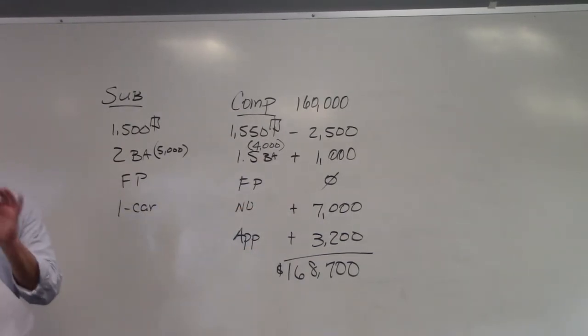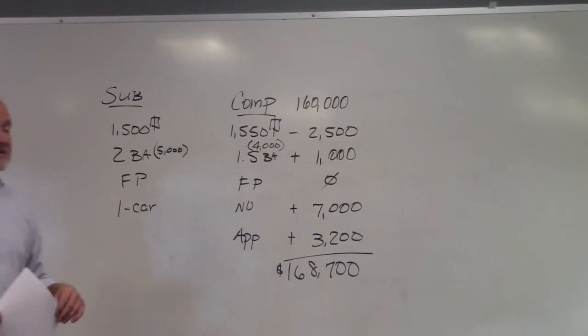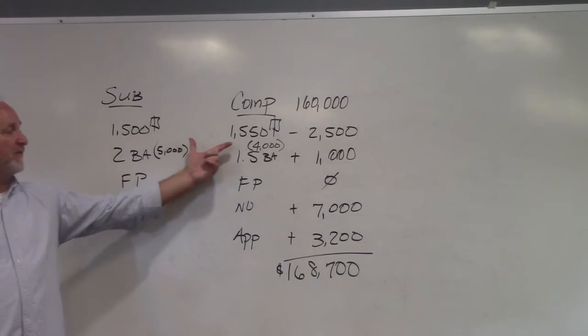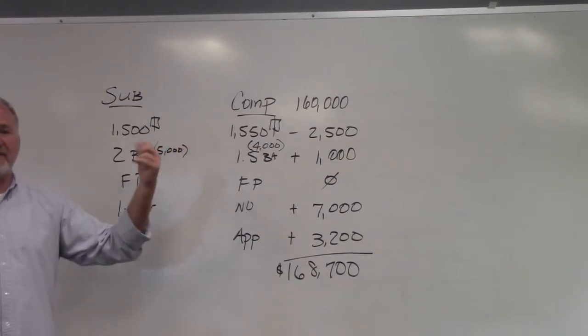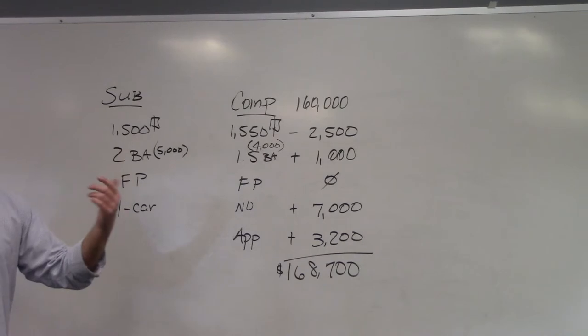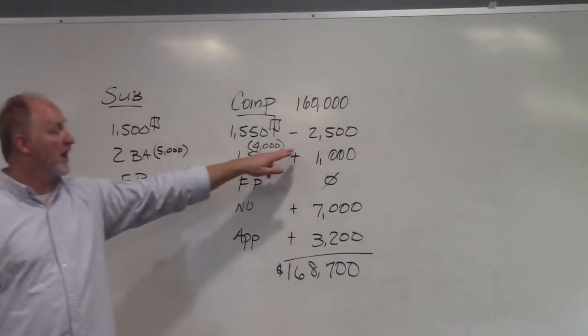Appreciation is always a plus adjustment. Now when you go back and start making these adjustments, remember, only adjust for the differences. The difference between 1,550 and 1,500 square feet is 50 square feet times $50 per square foot. That's where we've got our $2,500.